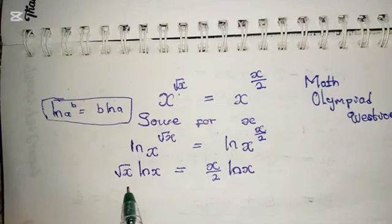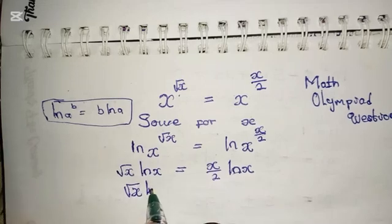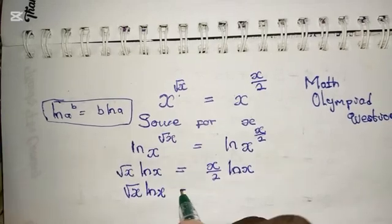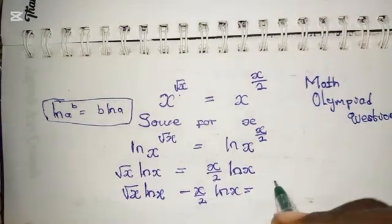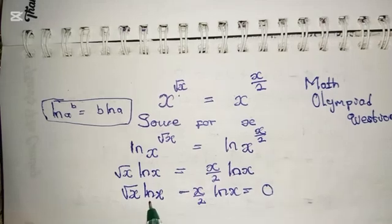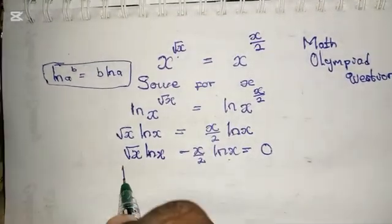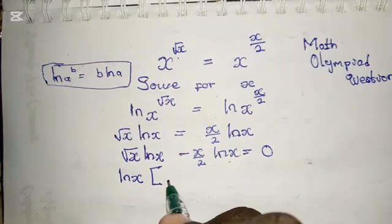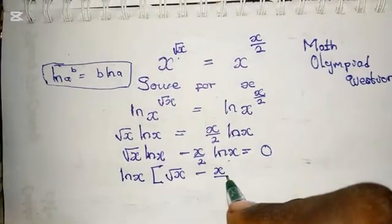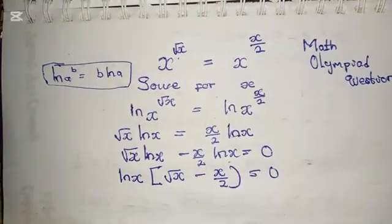Now bring this to the left hand side. So we have √x ln(x) minus x/2 ln(x). And if you look at this clearly, you can see that the natural log of x is common in both. So factor it out. We have ln(x) times (√x minus x/2) all equals to 0.